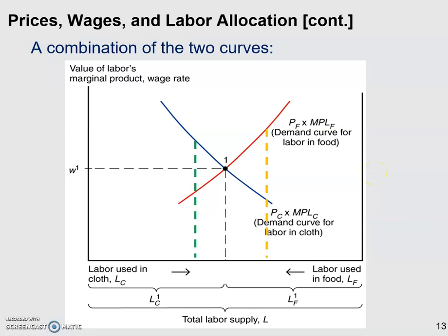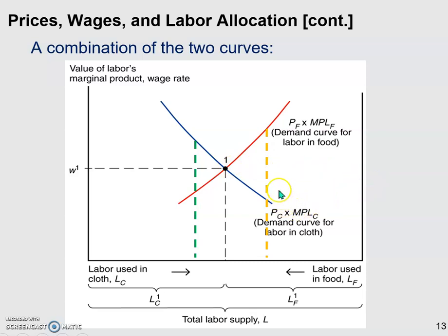You can also try the right-hand side of the equilibrium point, as shown by the orange dashed line. I'll leave this for you to figure out: if we start from there, which sector offers a higher wage, and what happens to the marginal product of labor in each sector — which eventually brings us back to the equilibrium. During class discussion, I'll ask some of you to share your reasoning with the rest of the class.